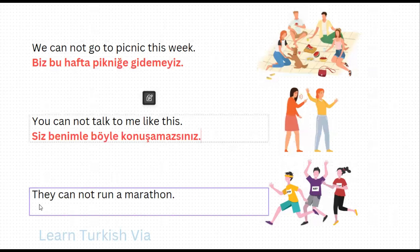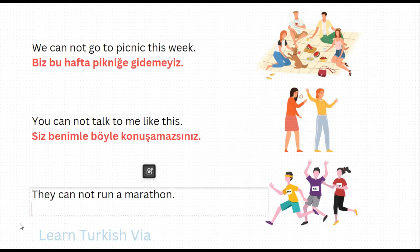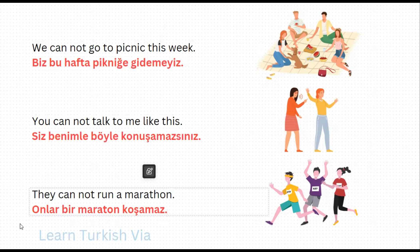And in the last sentence, 'they cannot run a marathon.' They – onlar. A marathon – bir maraton. Run – koş, cannot run – koşama, simple present tense negative suffix – koşamaz. For they, we don't need a personal pronoun suffix, so that's it. 'They cannot run a marathon' is 'Onlar bir maraton koşamaz.'